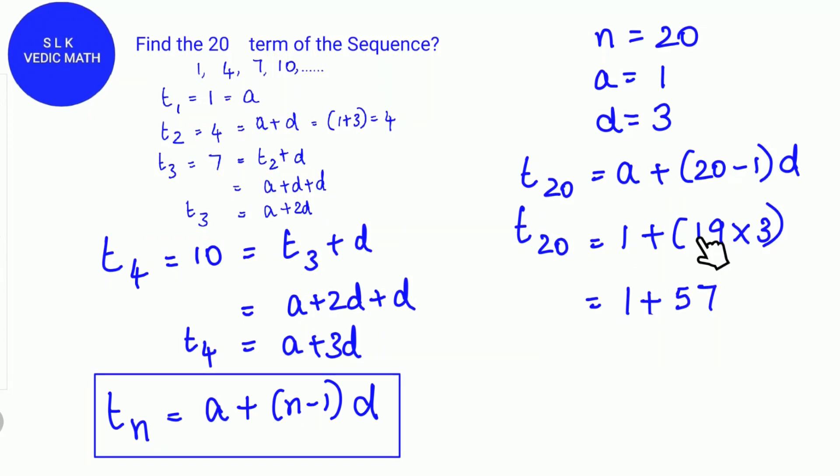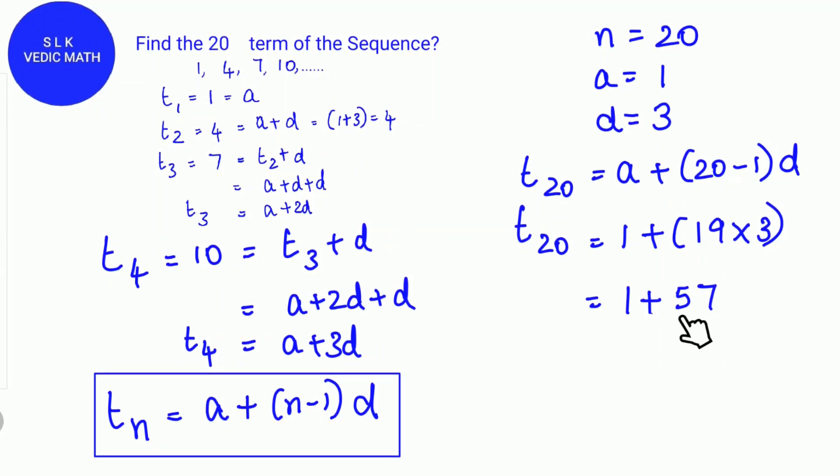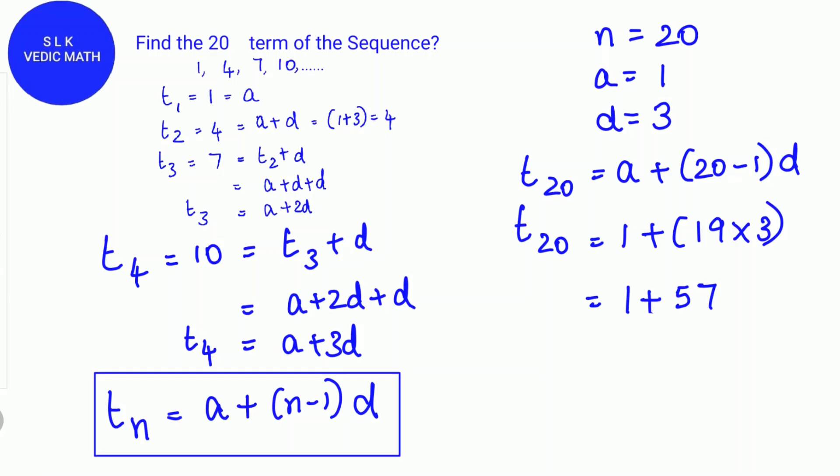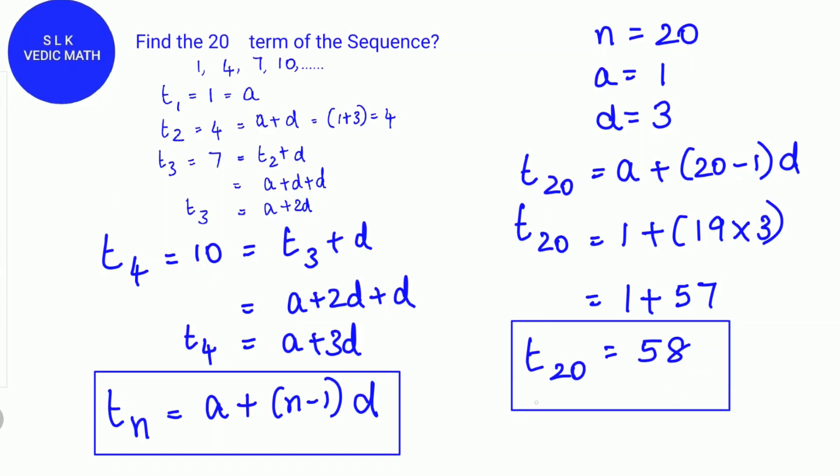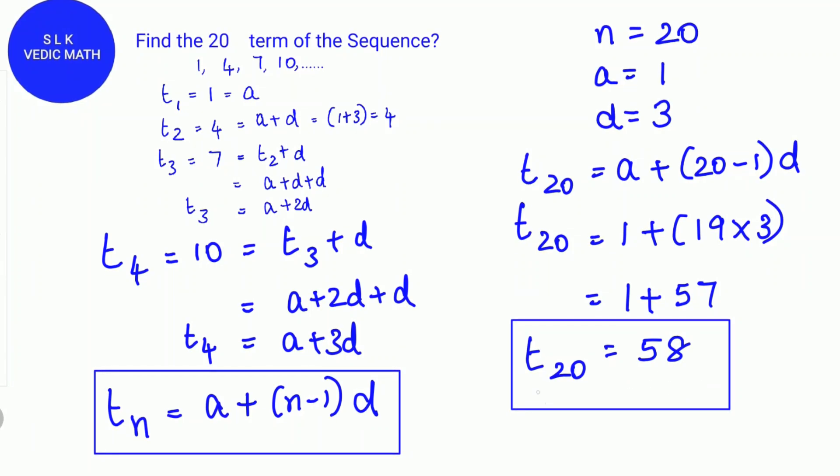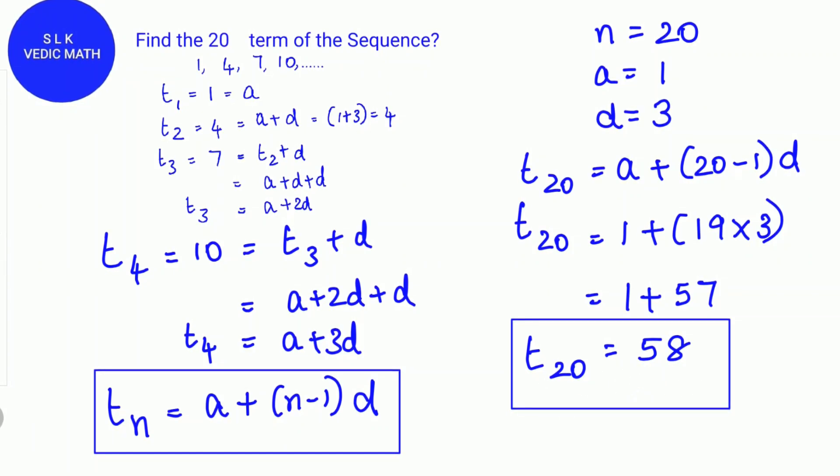19 into 3 is 57 and now we have to find out what's 57 plus 1. 57 plus 1 is 58. So the 20th term T20 is 58.